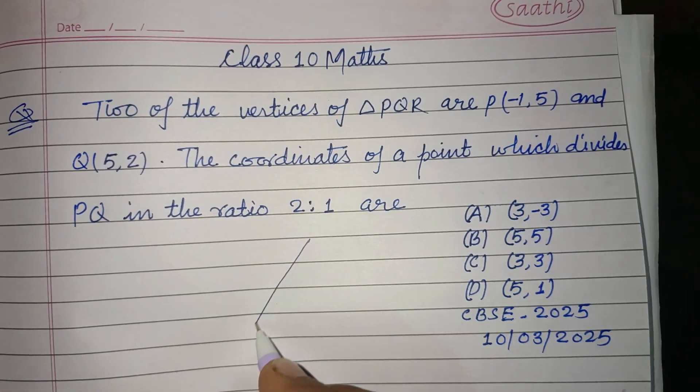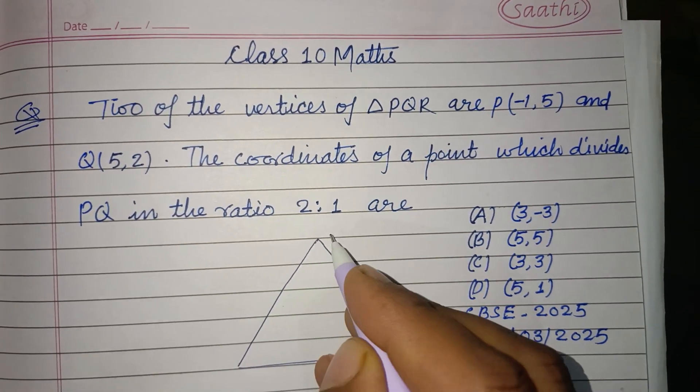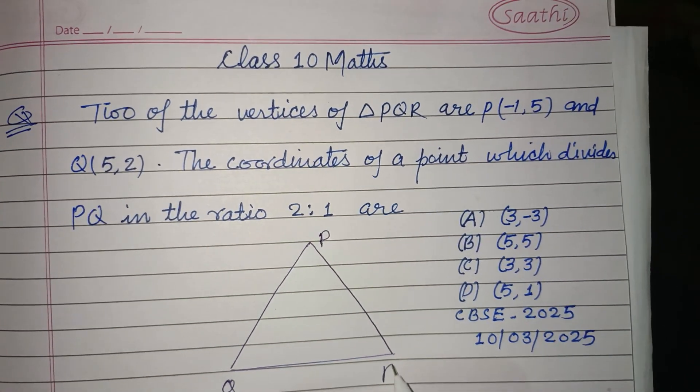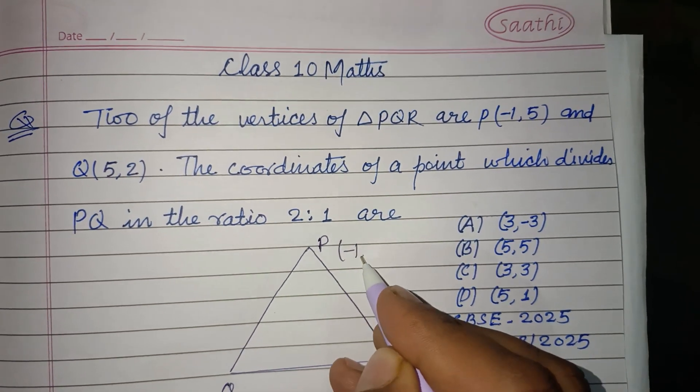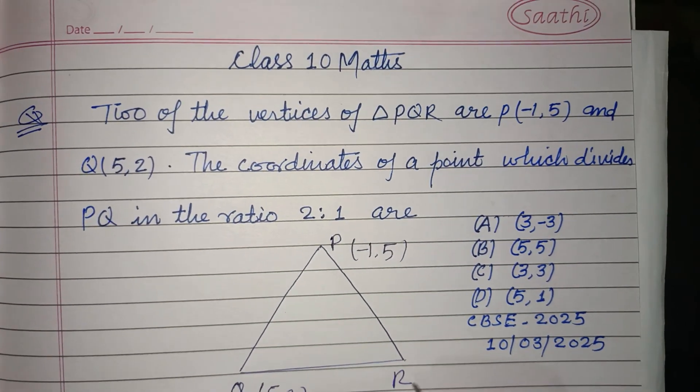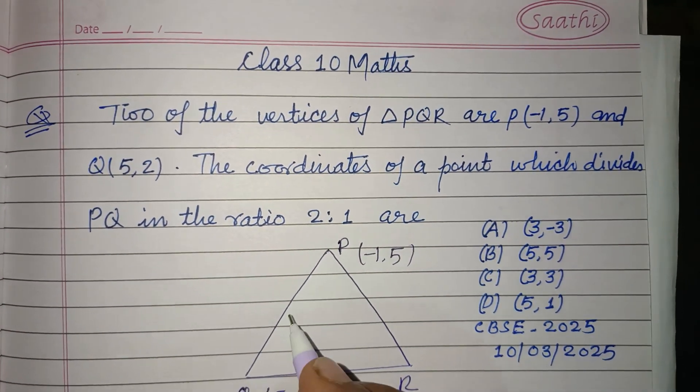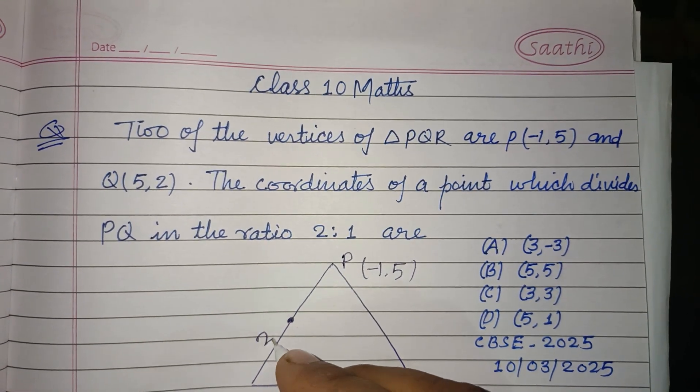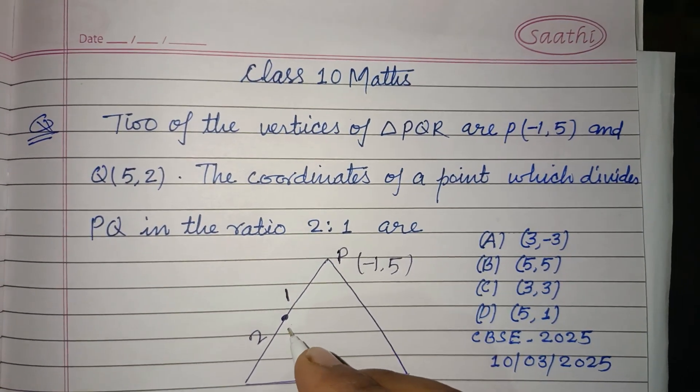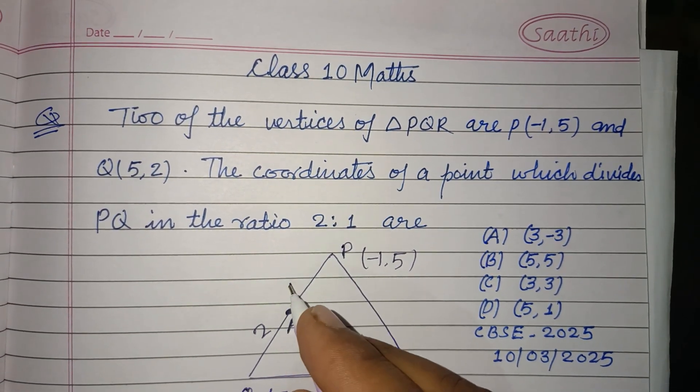So here is triangle PQR. P is (-1,5), Q is (5,2). The coordinate of the point which divides PQ in the ratio 2:1 - let this point be A.